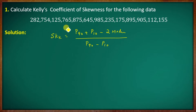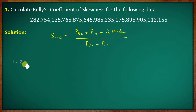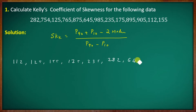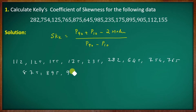We need to arrange the data in ascending order. In ascending order, the values are: 112, 125, 155, 175, 235, 282, 645, 754, 765, 875, 895, 905, 985.